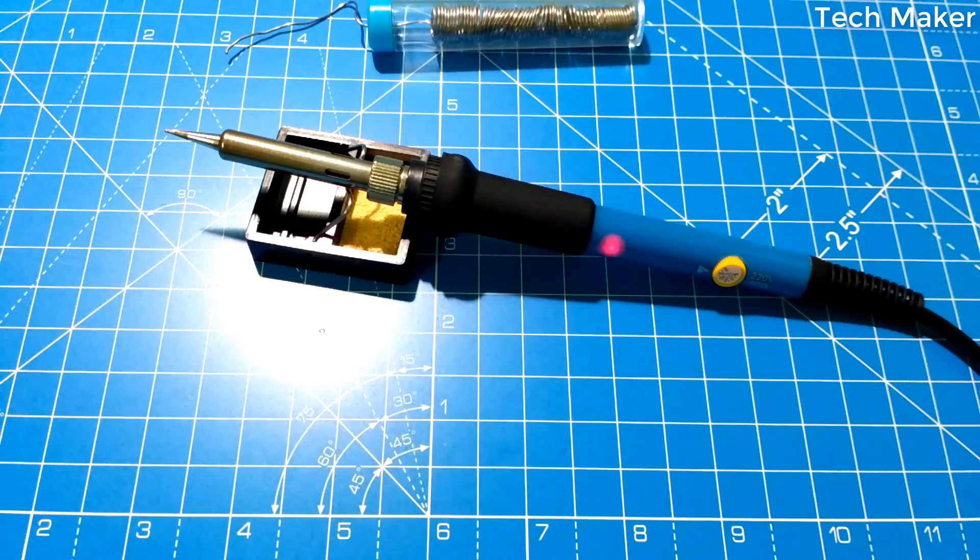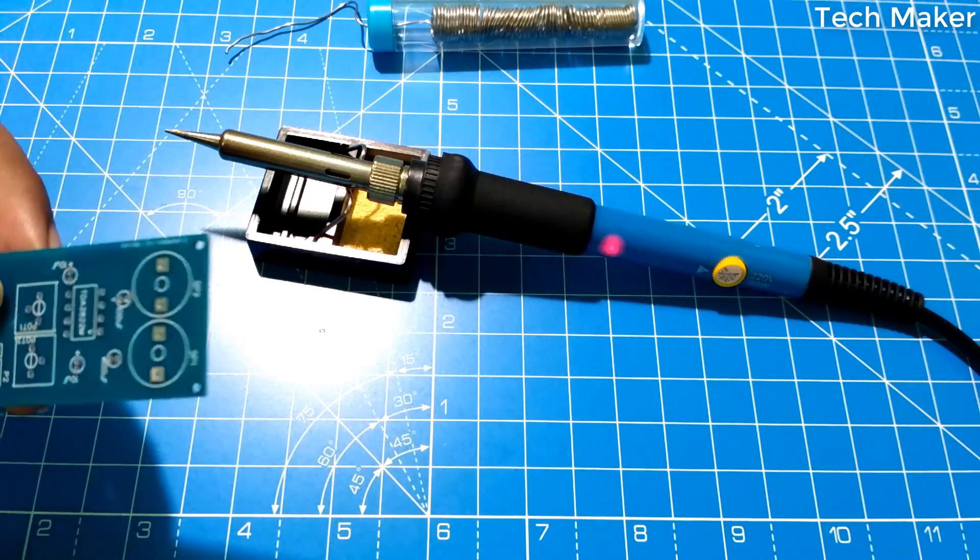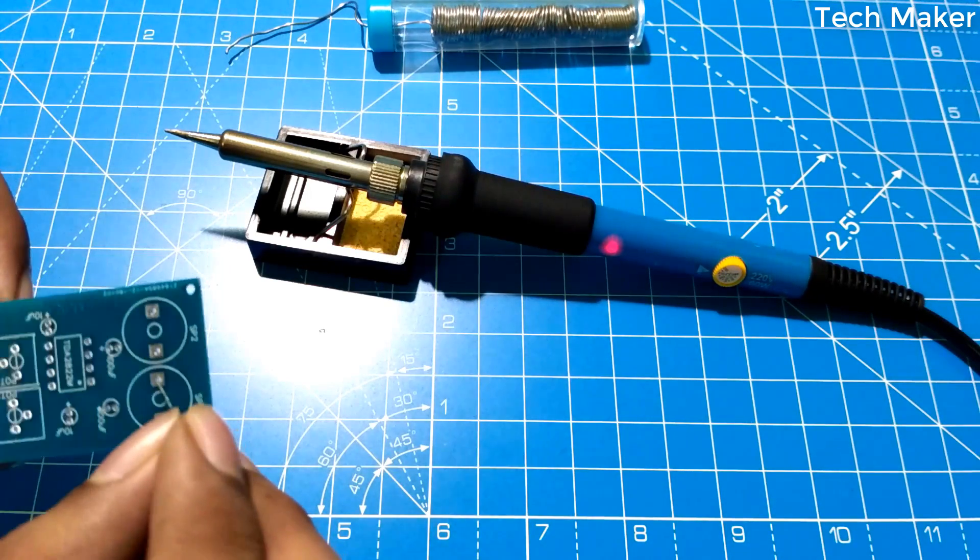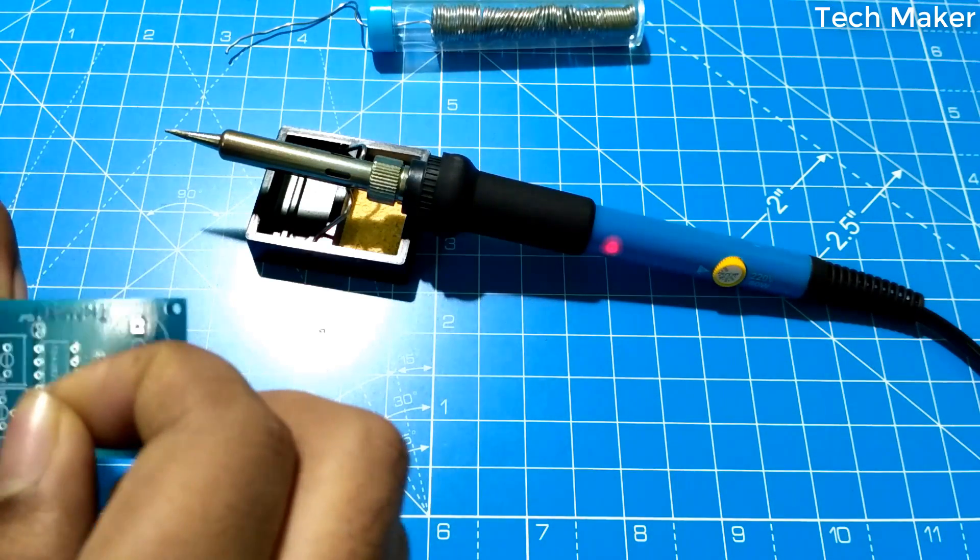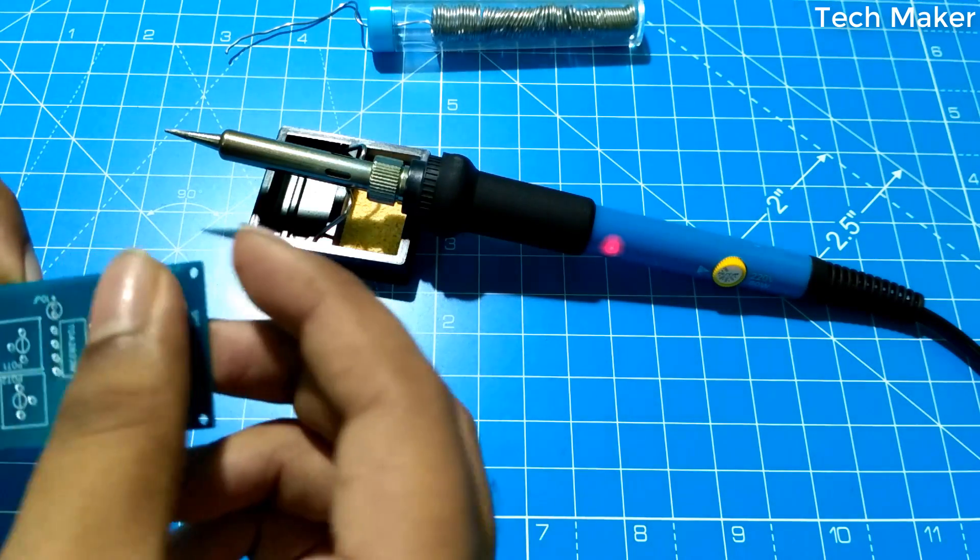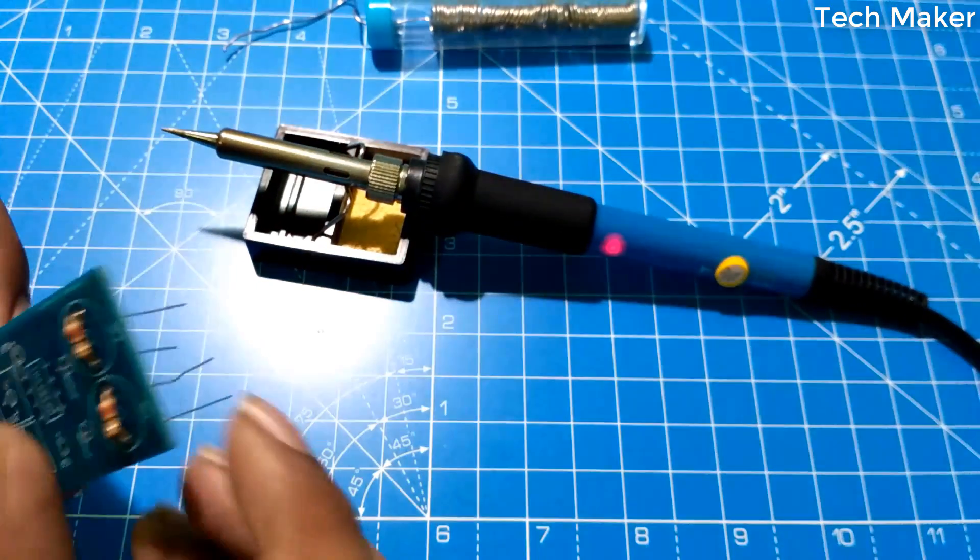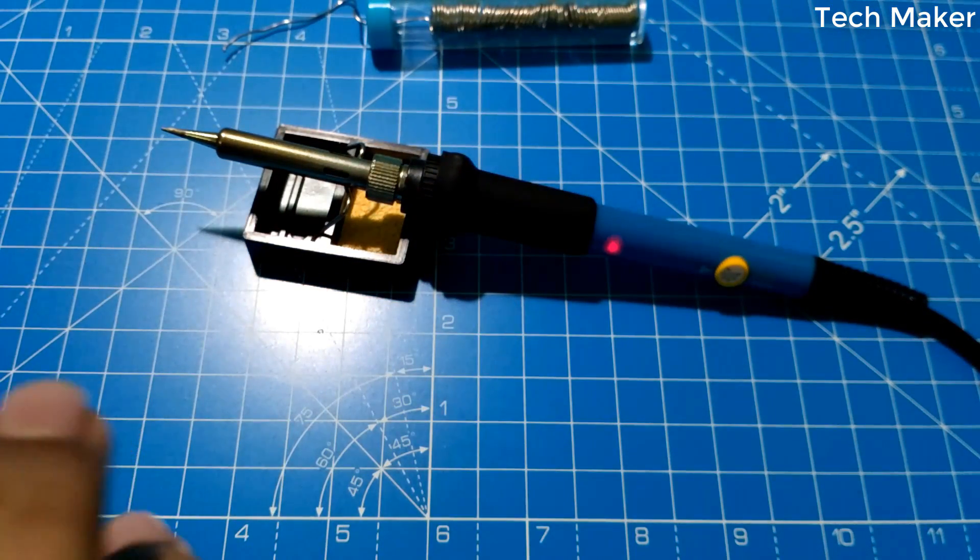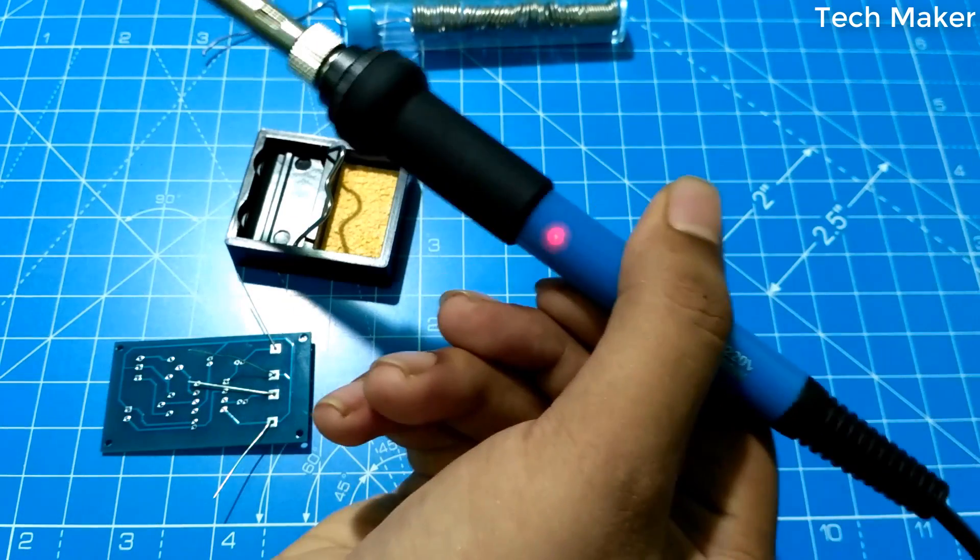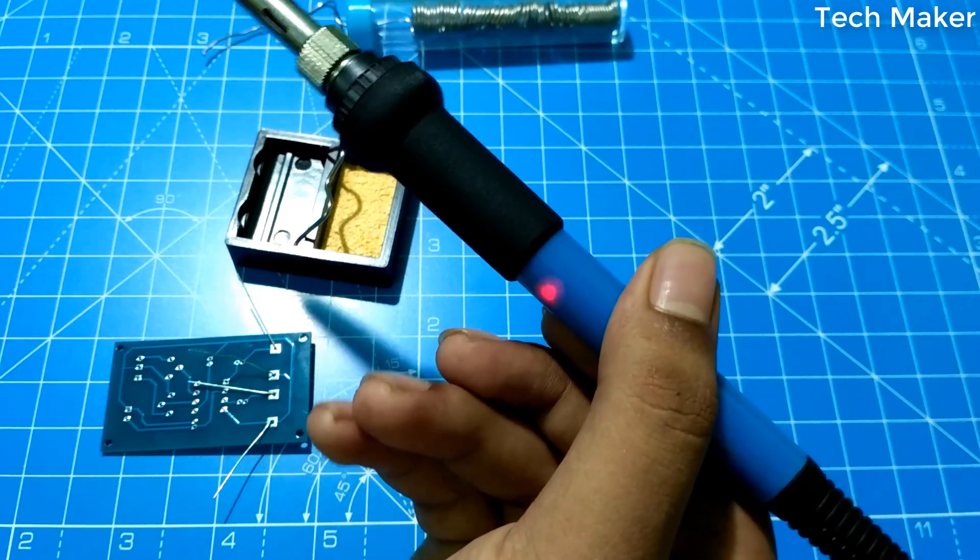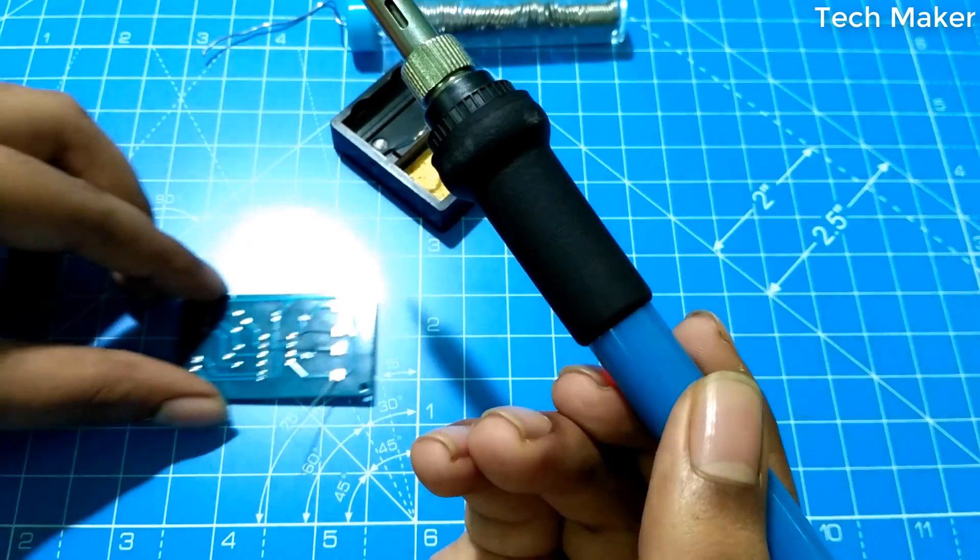Now, we will test this soldering iron by soldering this PCB with some resistors. I will place some resistors over this. Now we will solder this. You can see the red indicator here which shows that it is turned on. And now we will test by soldering this PCB.